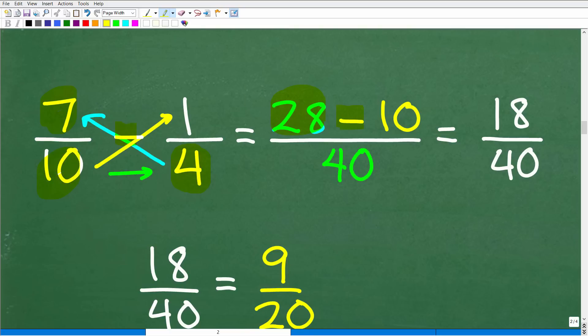10 times 1, which is 10. So that is the numerator. Now, to get the denominator, you're just going to multiply across. So 10 times 4 is 40.